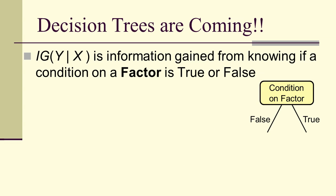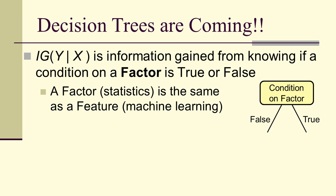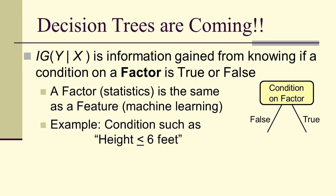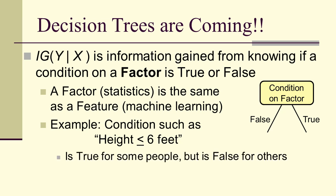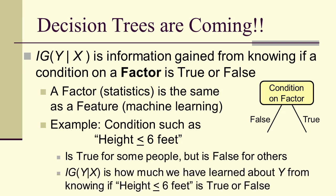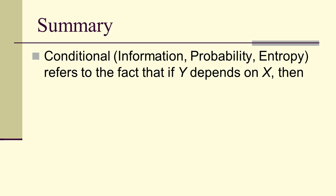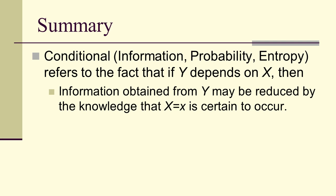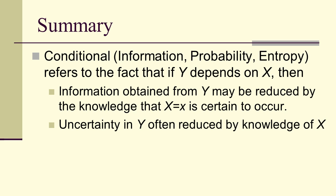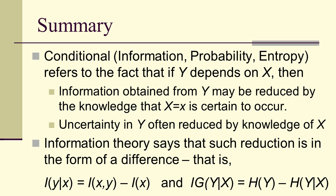Decision trees are coming. Information gain will be used to create decision trees based on whether a feature (or factor) is true or false — for example, 'height ≤ 6 feet.' The information gain tells us how much we learn about y from knowing whether that condition is true or false. In summary: conditional information, probability, and entropy refer to the fact that y depends on x. Uncertainty in y can be reduced by knowledge about x, and information theory says these reductions occur as differences — self-information differences, conditional self-information, and ultimately, information gain.